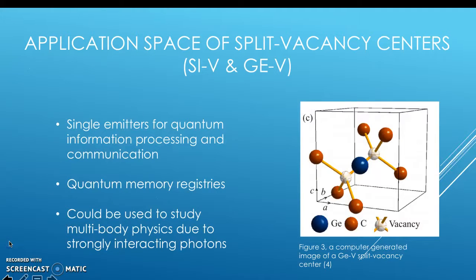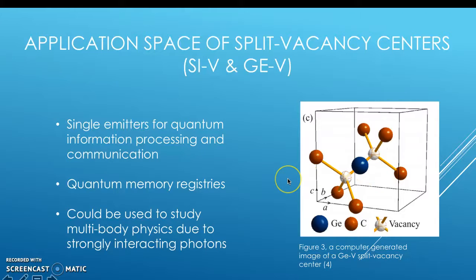Split vacancy centers such as silicon vacancies and germanium vacancies — a germanium vacancy is called a split vacancy because there's a vacancy on each side — can be used as single emitters for quantum information processing and communication. They can also be used for quantum memory registries due to spin manipulation, as well as potentially for multi-body physics due to strongly interacting photons.